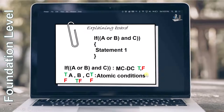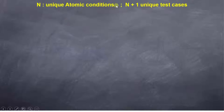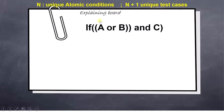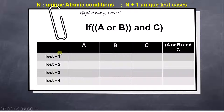Now let's see how. Since we have n unique atomic conditions, we need n+1 unique test cases. In our example we have 3 atomic conditions, so we need only 4 test cases. Here you can see there are 4 test cases, with 3 atomic conditions and a final decision output. Depending on the atomic conditions, we will see what change occurs in the decision.